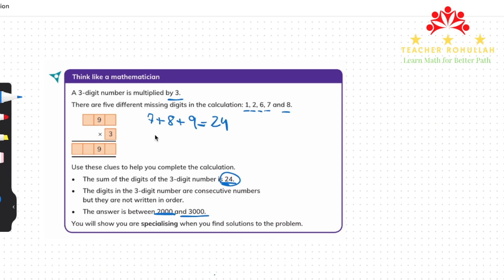Now we will first place 7 here and 8 here and let's see if it gives us the correct answer or not. It may fulfill the requirement that says the answer is between 2,000 and 3,000 but we have to have 2, 1, and 6 in our answer.